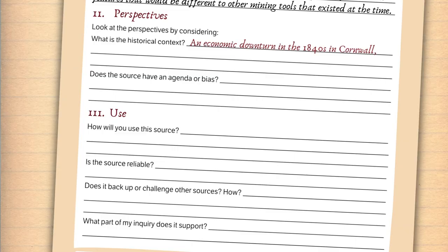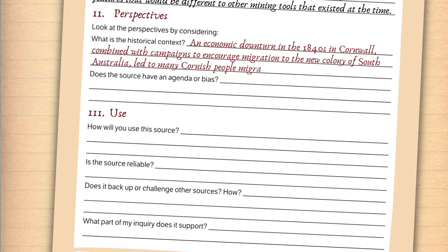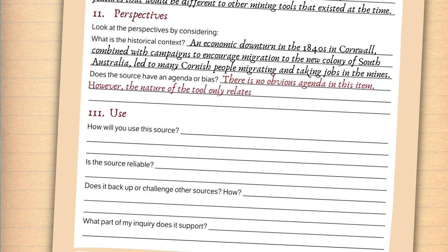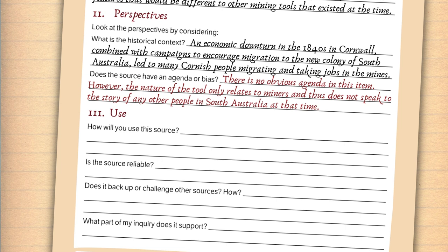From my research on the SA History Hub, I have learned about the context. An economic downturn in the 1840s in Cornwall, combined with campaigns to encourage migration to the new colony of South Australia, led to many Cornish people migrating and taking jobs in the mines. Does the source have an agenda or bias? There is no obvious agenda in this item. However, the nature of the tool only relates to miners and thus does not speak to the story of any other people in South Australia at the time.